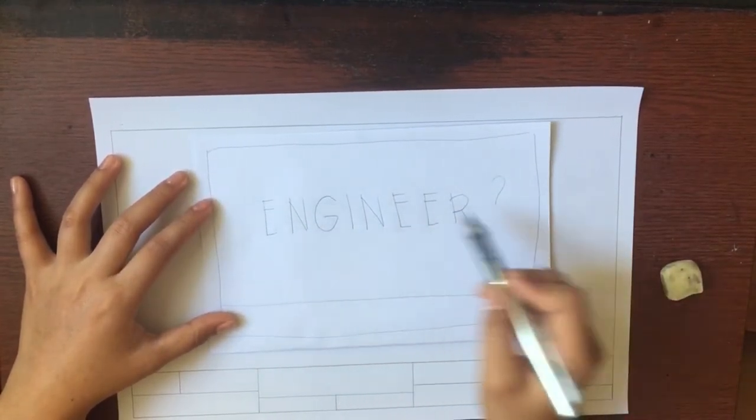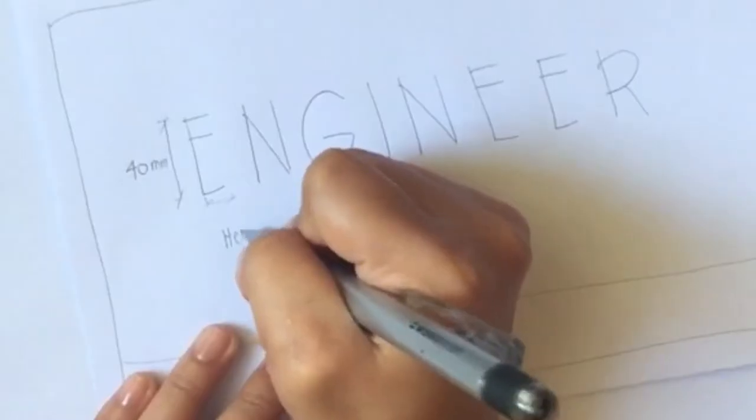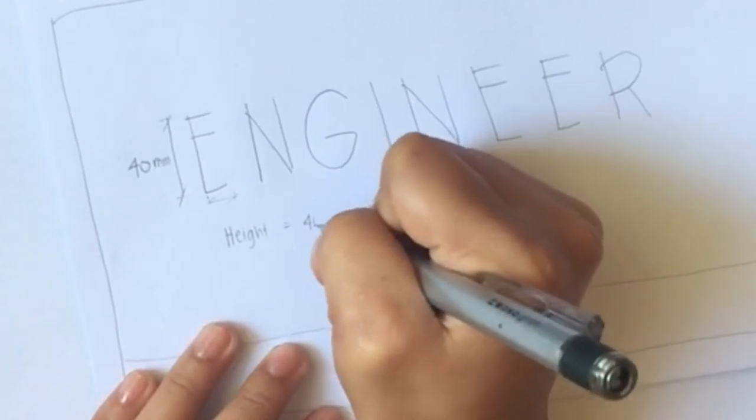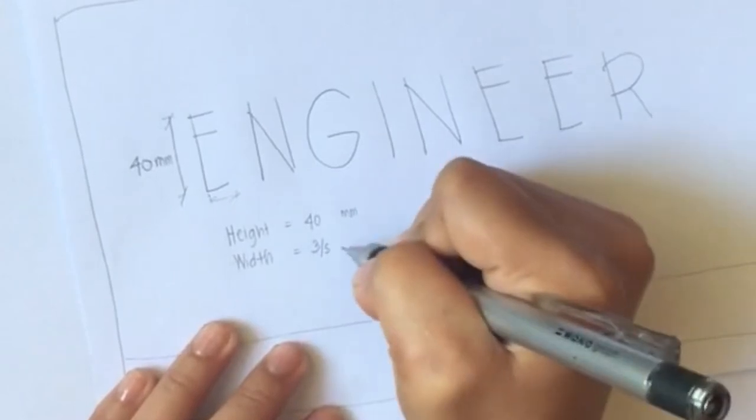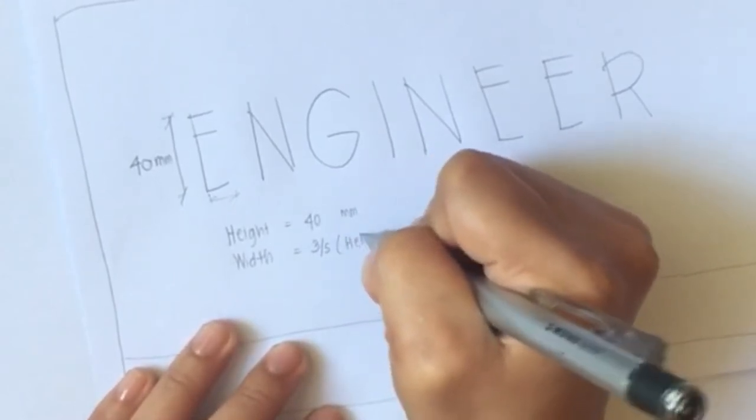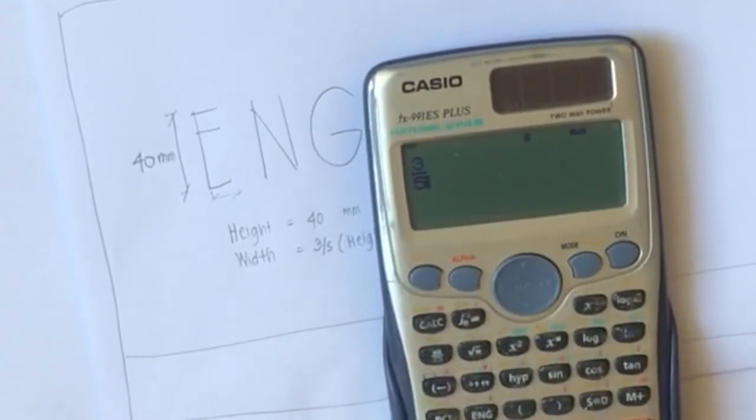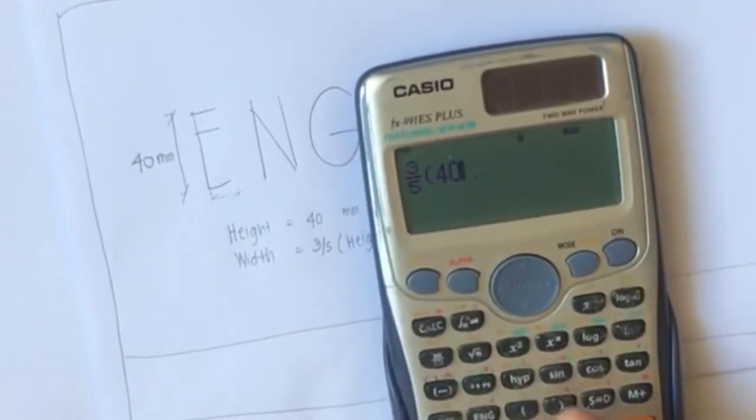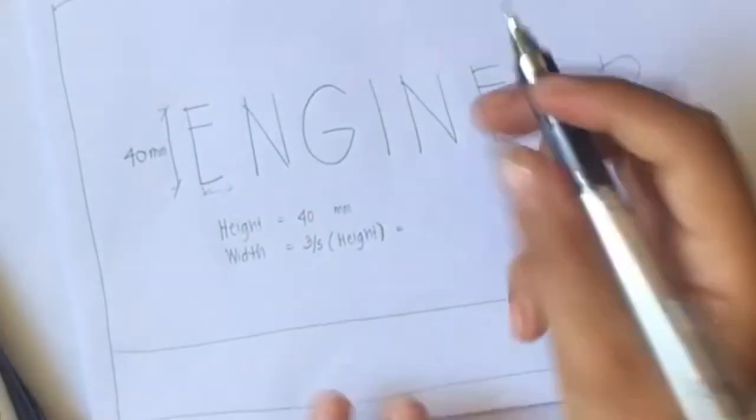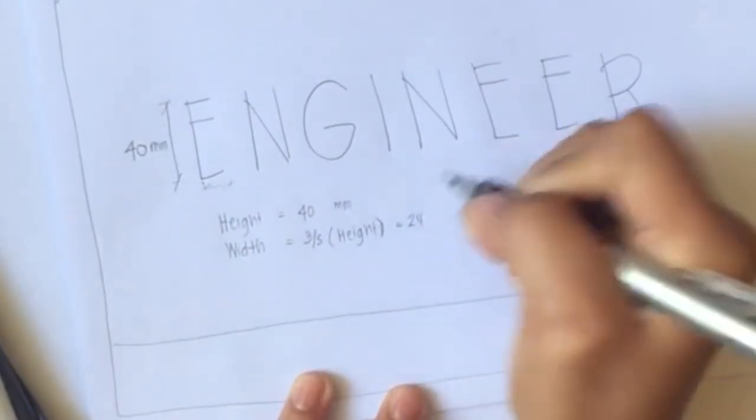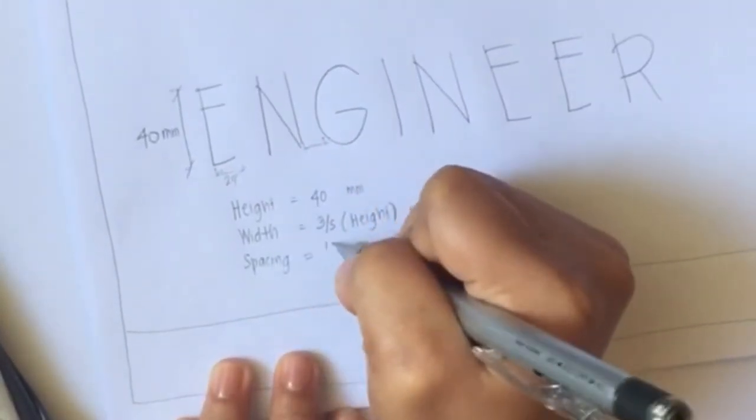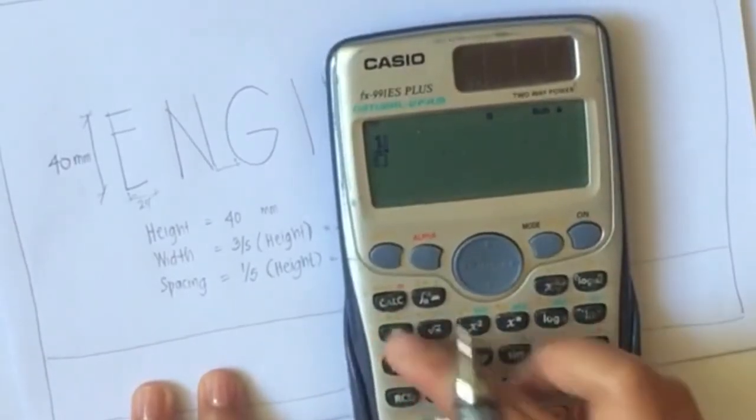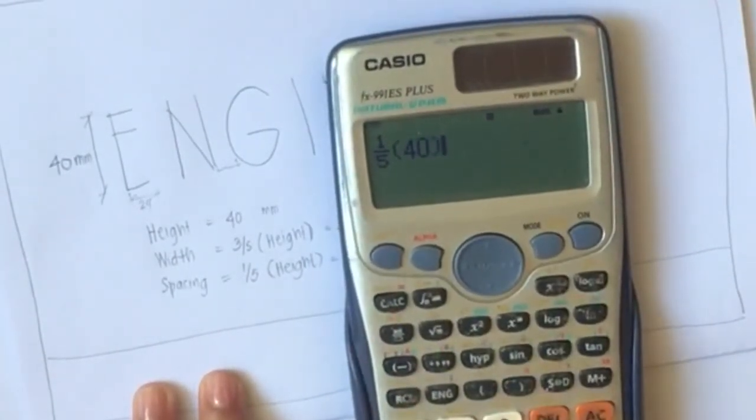For example, this is our bond paper, so we will put some margins there. We will be writing the word 'engineer' here in our paper. In order for us to center text or put this text on the center of this bond paper, we have very small computations. For example, we are given the height by our teacher, 40 millimeters. Our teacher gave us a ratio: if you have a height, your width would be 3/5 of the height. So our width would be 3/5 multiplied by 40 millimeters, that would be 24 millimeters. Next is for the spacing. For our spacing, we shall need 1/5 of the height. So 1/5 times 40 millimeters, that would be 8 millimeters.